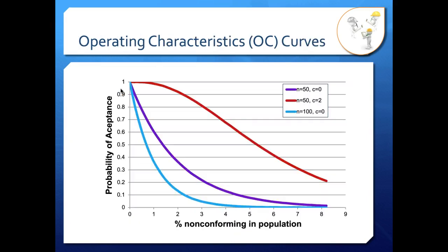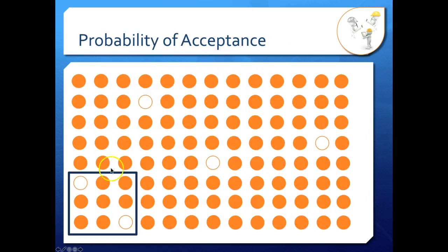Let's see what that looks like on the chart. Here's our chart again. So we have our three different curves and our axes are the probability of acceptance or how likely we are to accept the lot versus the percent non-conforming in the population. So if we go back to our lot here of orange balls or what is supposed to be orange balls, that's 104 balls and we have five balls that are white. So we have about 0.48% non-conforming in our population.